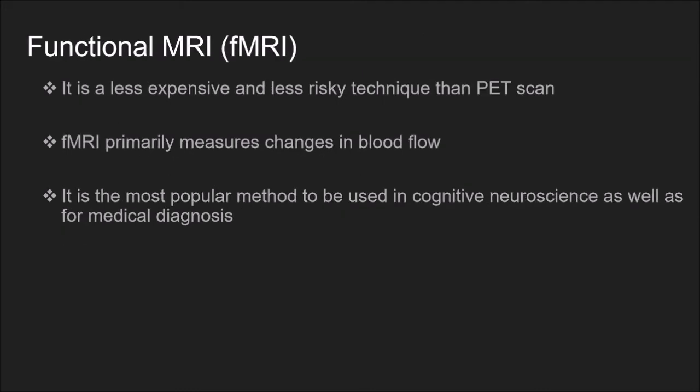Functional MRI or fMRI is a less expensive and less risky technique than PET scan. fMRI primarily measures changes in blood flow, known as the hemodynamic response. Currently, it is the most popular method used in cognitive neuroscience as well as for medical diagnosis.